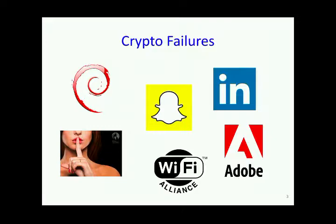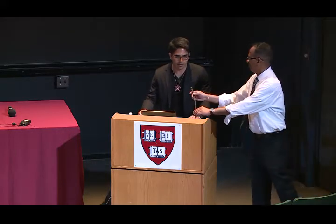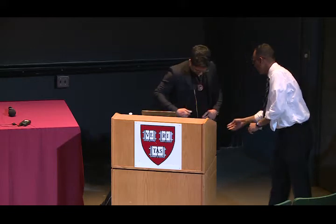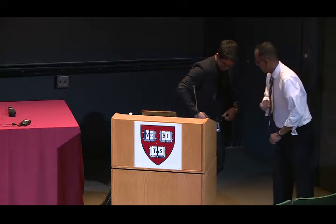Other companies like Snapchat were using the wrong kind of cryptography — using one different wrong letter, for example using ECB instead of CBC — which put their secrets at risk. Even experts like the Wi-Fi Alliance made a mistake when designing the Wi-Fi communications standard. So it's not only amateurs; even professionals and experts can make mistakes.